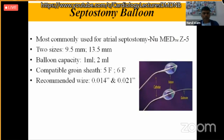The septostomy balloon is used especially for congenital cyanotic heart disease — specifically transposition with intact septum — and is a life-saving procedure. Two sizes are available: 9.5 mm and 13.5 mm with balloon capacity of 1 ml and 2 ml. Inflating with 2 cc of diluted contrast achieves the maximum 13.5 mm size for larger babies. The recommended guidewire is 0.021 inches.